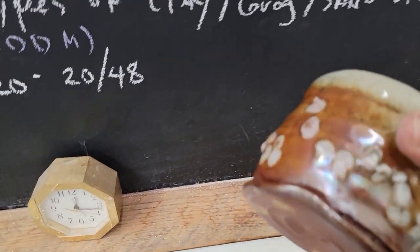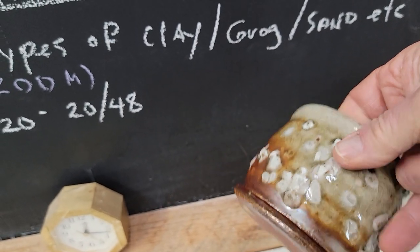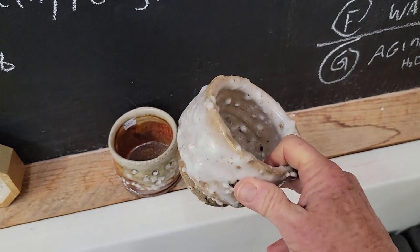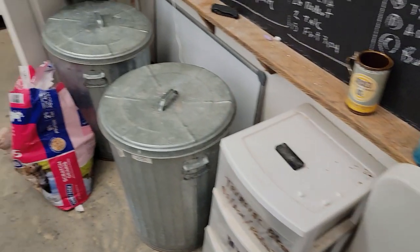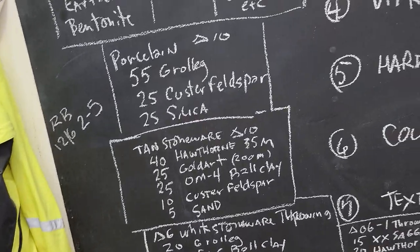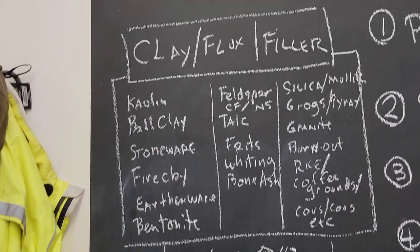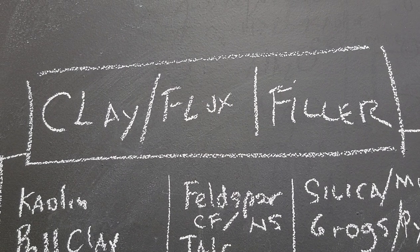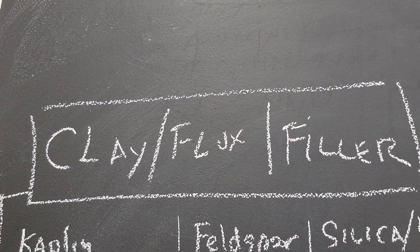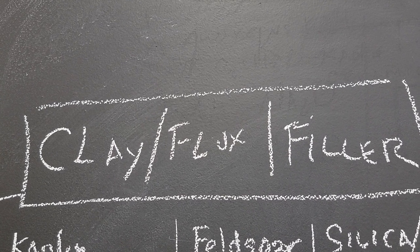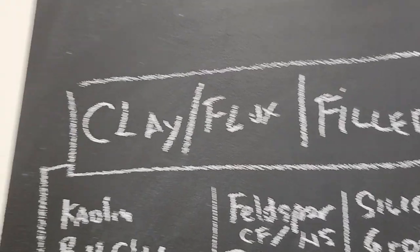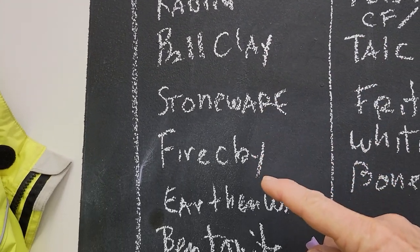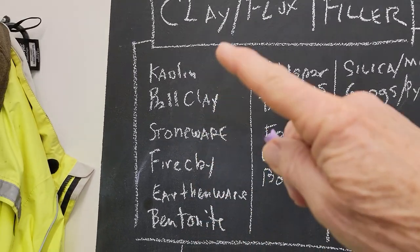Here's a t-bowl with granite and feldspar inclusions in it — this one is definitely feldspar; you can see it oozing out of there. Not very functional. So, an overview of constructing a clay body: clay bodies consist of clay, flux, and filler — as opposed to a glaze which is flux, refractory, and glass former. In the clay category we have kaolin, ball clay, stoneware, fire clay, earthenware, and bentonite — you combine those in certain proportions to make the clay body you want.